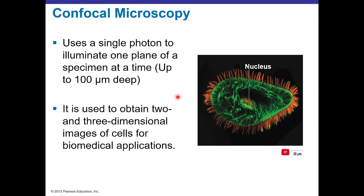Confocal microscopy uses a single photon to illuminate the specimen one plane at a time, capturing image stacks up to 100 micrometers deep. A computer software merges these stacks to generate two-dimensional and sometimes three-dimensional images of cells. As demonstrated with paramecium, confocal microscopy reveals the nucleus, cytoplasm (shown in green), and pili or flagella around the specimen in fine detail.